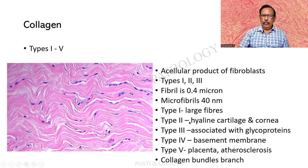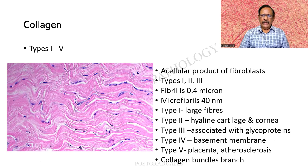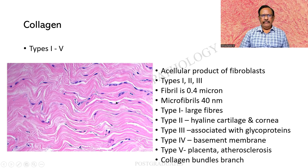There are different fibre types. Type 1 is large. Type 2 occurs in the hyaline cartilage and the cornea. Type 3 is associated with glycoproteins. Type 4 incidentally forms the basement membrane — we never thought the basement membrane is also a form of collagen, particularly in the kidney where it is of great importance. Type 5 occurs in the placenta and lesions such as atherosclerosis. As mentioned, collagen bundles branch but fibrils do not. I am seeing delicate fibroblasts and bundles of wavy, pale collagen, and in some areas a ground substance with gaps that can be artifactual contractions.